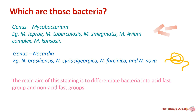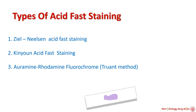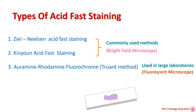Mainly there are three types of acid fast staining techniques. First is Ziehl-Neelsen staining technique, second is Kinyoun acid fast staining technique, and third is Auramine-Rhodamine fluorochrome staining technique, also known as the Truant method. Ziehl-Neelsen and Kinyoun methods are commonly used as they use a bright field microscope for observation, which is easily available in any science laboratory, while the Auramine-Rhodamine method needs a fluorescent microscope and is used by large laboratories.